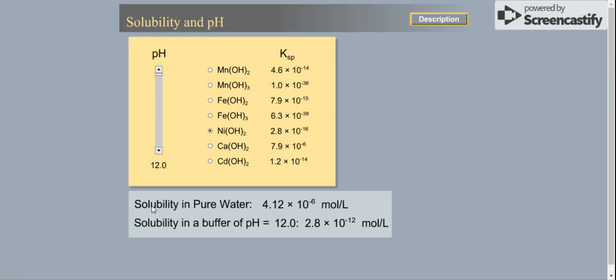Down here it's the solubility in pure water and then how it changes if we change the pH. For example, if I have manganese hydroxide, it's got a very small solubility product and so it is not very soluble in water.